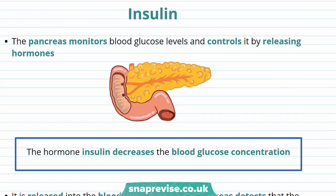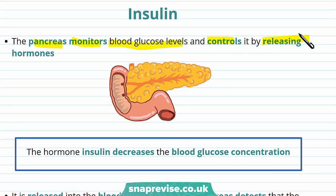So how do we avoid this and regulate blood glucose levels? We do this through hormones. The pancreas monitors blood glucose levels and controls it by releasing hormones. One of these hormones is insulin.